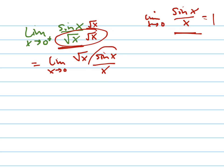See how that worked? This goes to 1 because of that property. So now I have the limit as x goes to 0.